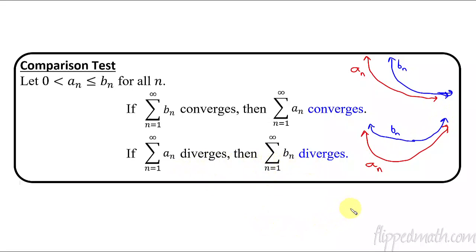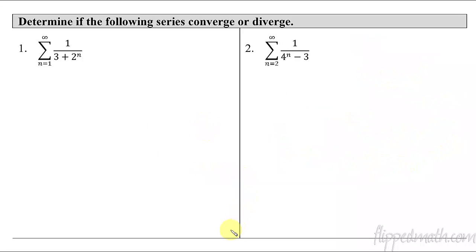That's called the comparison test. I would think of it like graphs. The one that's above it — if it's converging, then the one underneath it must converge. If the one below it is diverging, the one above it must also diverge. That's what these two statements mean. All right, let's put it into practice. So what we have to do is find an example of something that we can compare it to.